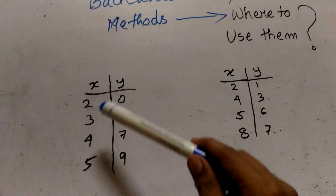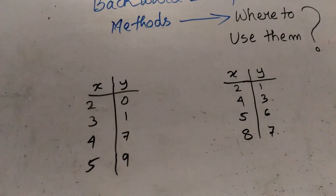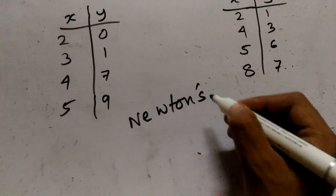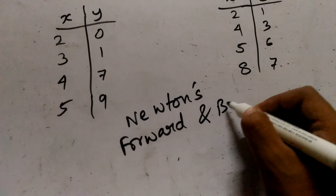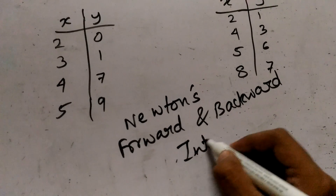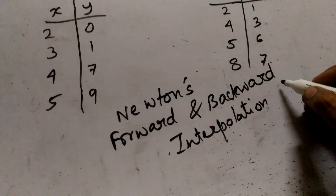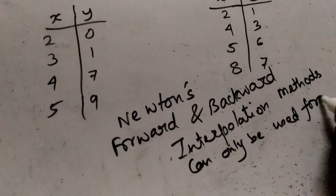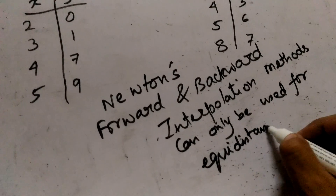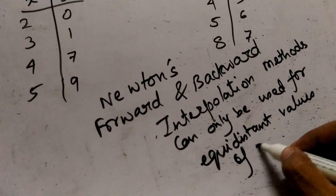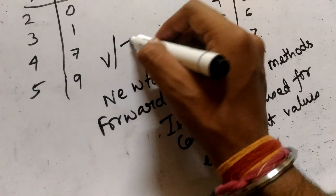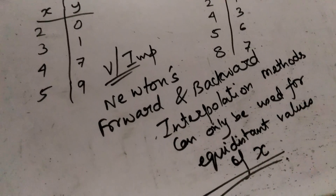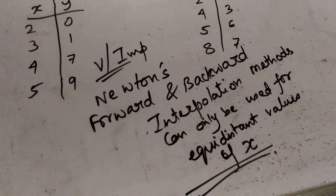Newton's Forward and Backward Interpolation methods can only be used if the values of x are equidistant from each other. This is a very important statement — always keep this in mind before solving problems using Newton's Forward or Backward Interpolation method. Thank you.